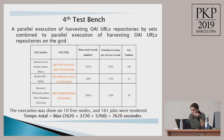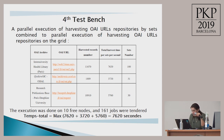In the fourth test bench, we performed a parallel execution of harvesting OAI repositories by sets, combining two parallel executions of OAI repositories. The execution was also done on 10 free nodes, but 161 jobs were submitted simultaneously. The total harvest time in this case is the time of the longest harvest.